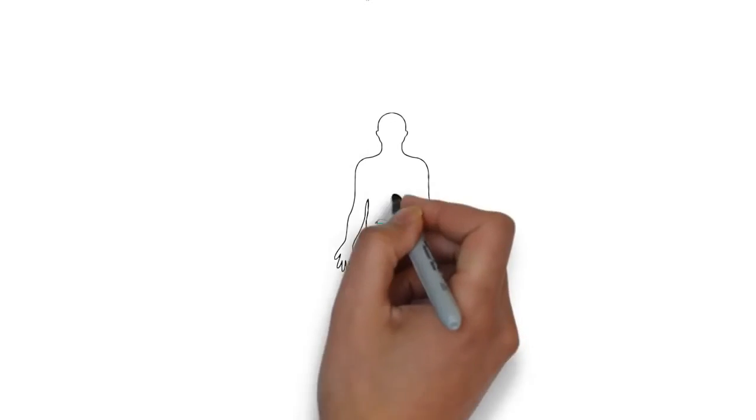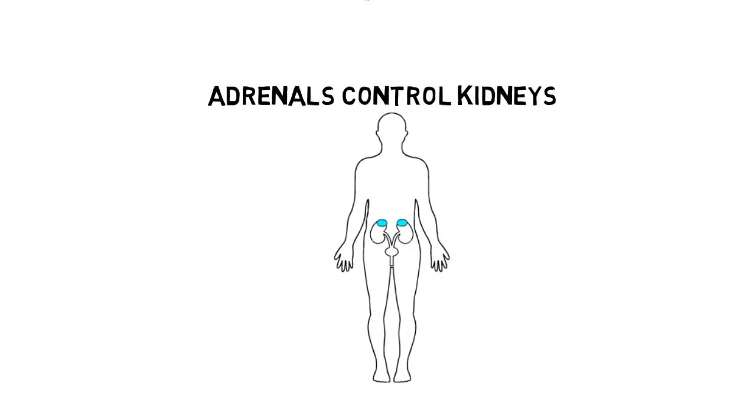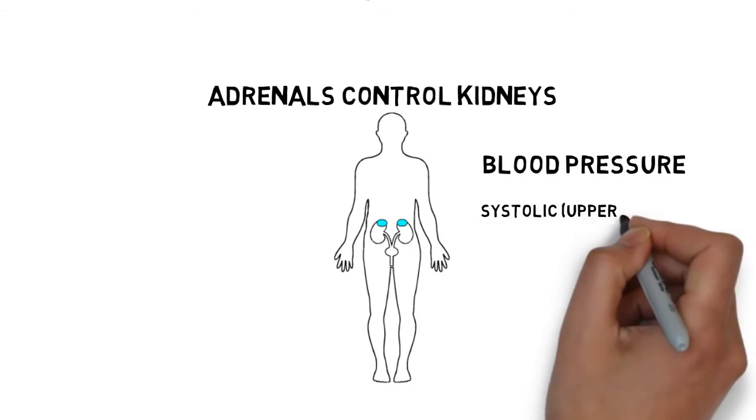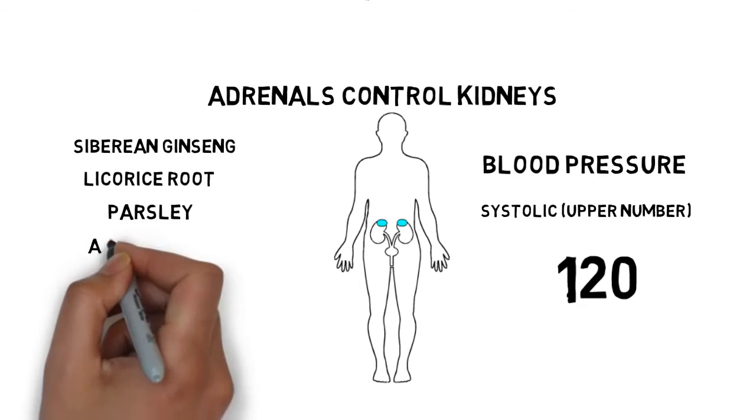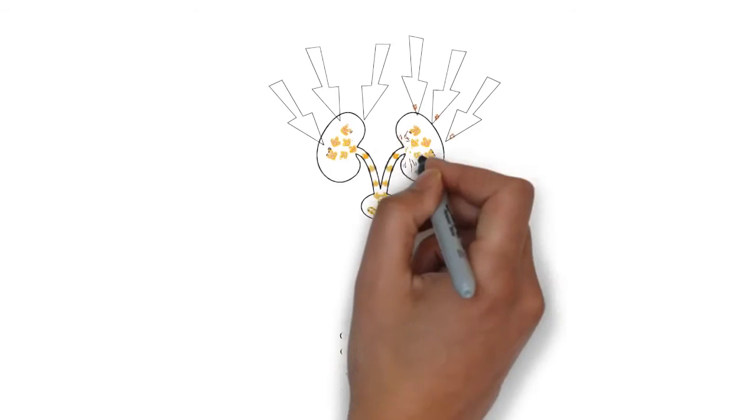Work on the adrenals as well. The adrenal glands control the kidneys so they must be strong. A good way to check adrenal power is by your blood pressure. Your systolic or upper number should be around 120. Adrenal herbs can help bring this up. Siberian ginseng, licorice root, parsley, astragalus, and dandelion can help.